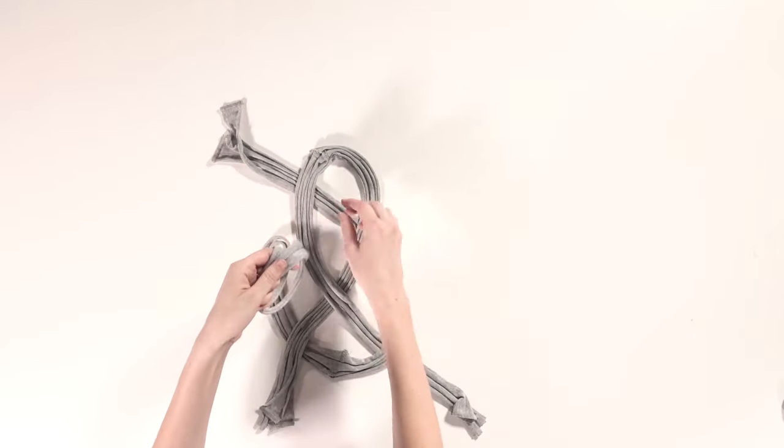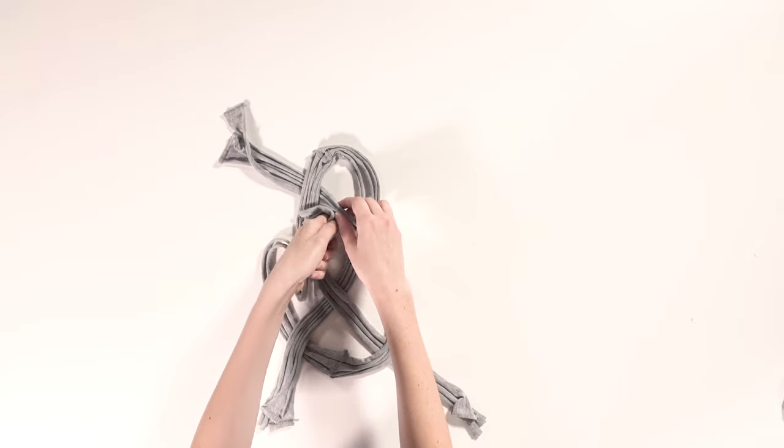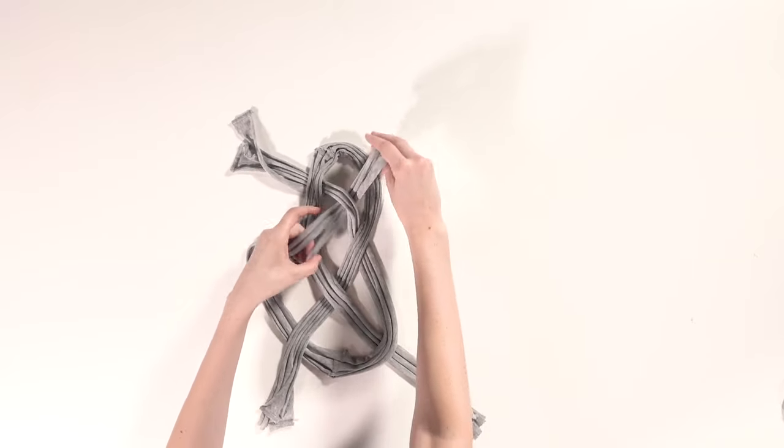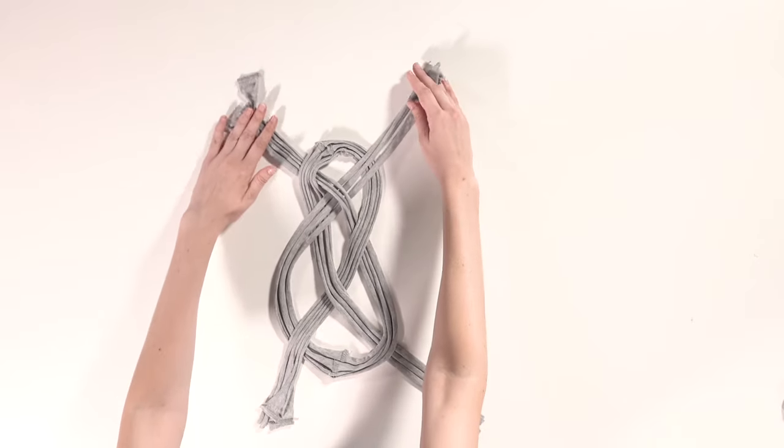Then take the upper left-hand side of the U and we'll be weaving it over the top part of the headband. Go over the top of the first strand, under the middle strand, over the outside strand of the loop.